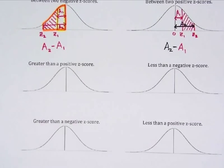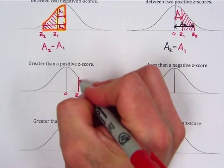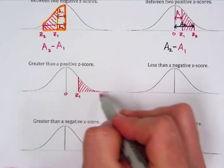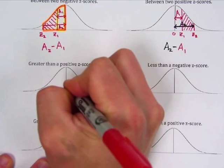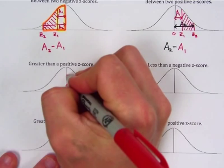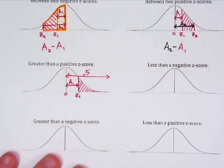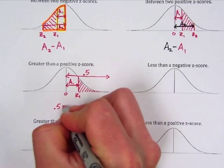For greater than a positive z-score: we have our mean at 0 and a positive z-score, and we want the percent of data greater than that value — the little tail to the right. When you find the area in the table, you get the area from the mean to the z-score. But since we want just the tail, and the area from the mean to the right is 0.5, we calculate 0.5 − A₁.